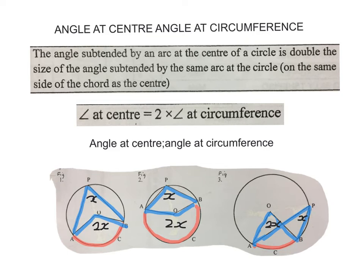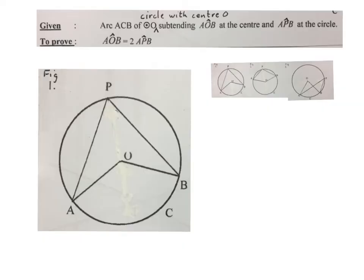Again, last time, just the words. The angle subtended by an arc, the opposite is arc, at the center of the circle is double the size of the angle subtended, each opposite it, by the same arc at the circle circumference. Now we are going to do the proof of this theorem.